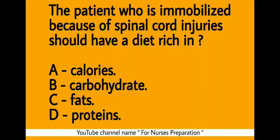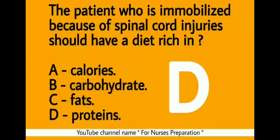Question 2. The patient who is immobilized because of spinal cord injury should have a diet rich in: option A, calories; option B, carbohydrate; option C, fat; option D, protein. The right answer is option D. An immobilized spinal cord injured patient must have a protein-rich diet.